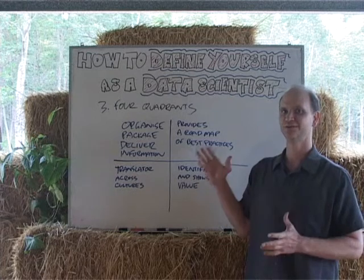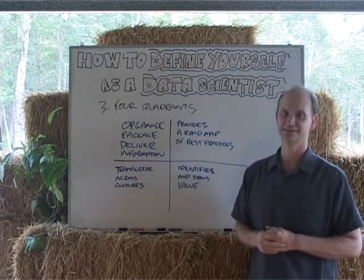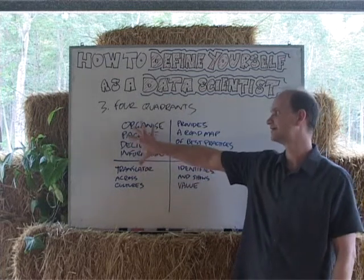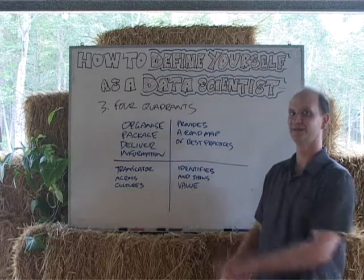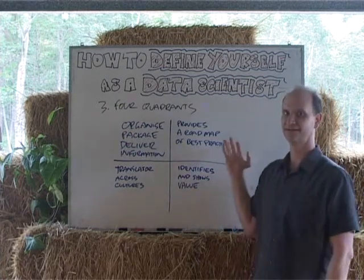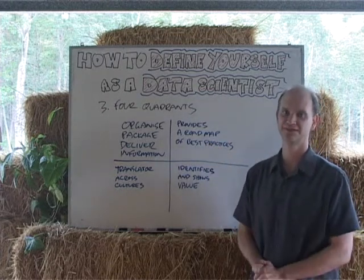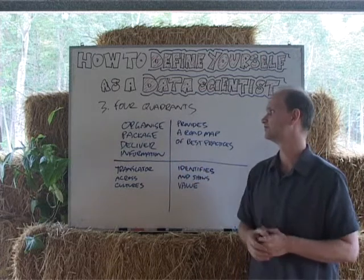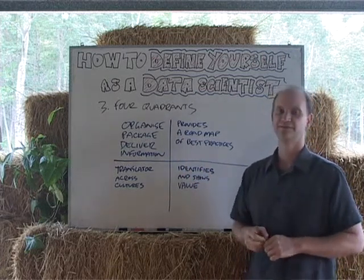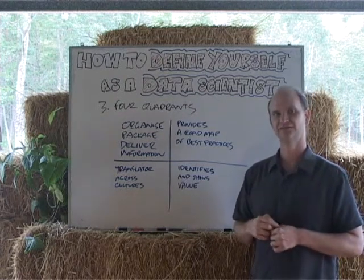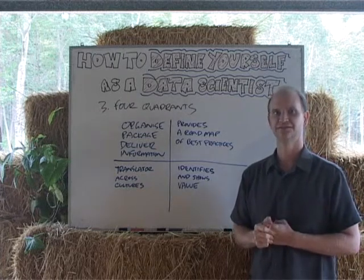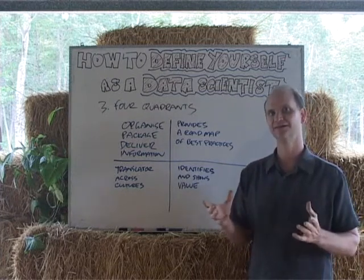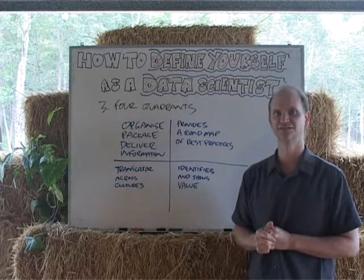Jumping to point three, the four quadrants: I've left the essentials of what a data scientist does up on the board and included three more around them. On the top right, the data scientist provides a roadmap of best practices — that's about processes and frameworks for achieving how you organize, package, and deliver the information. On the bottom left, I've written 'translator across cultures.' In my experience working across research and projects, there are a lot of cultural barriers that develop unconsciously between different organizations or teams.